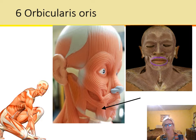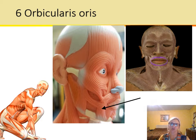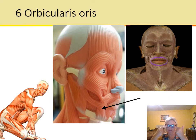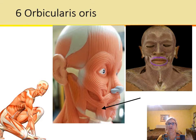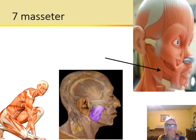Orbicularis oris — remember orbicularis means little circle. We did orbicularis oculi for the eye, and now orbicularis oris is the one that goes around the mouth. It's a little circle around the mouth, and this muscle is what helps you to purse your lips.